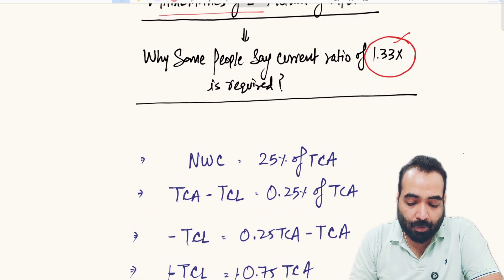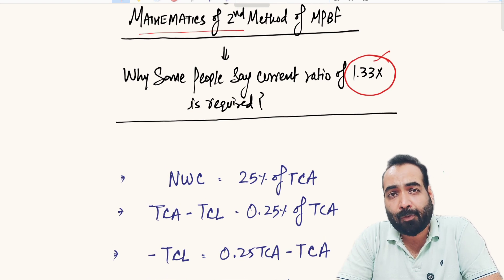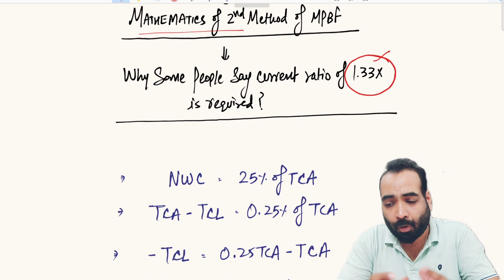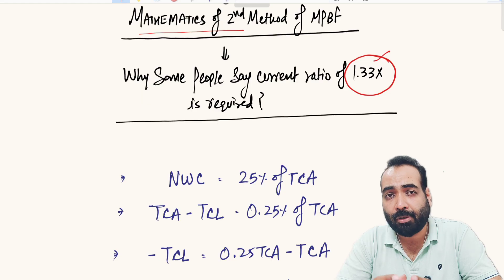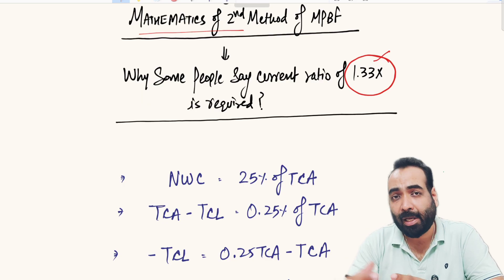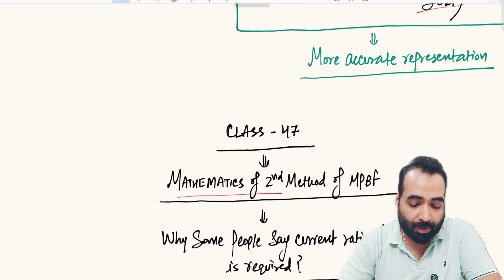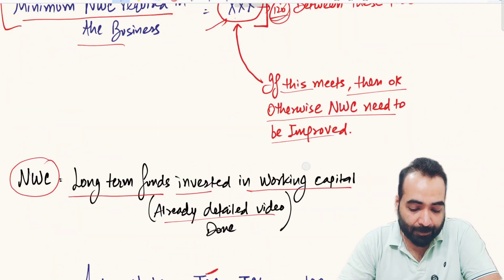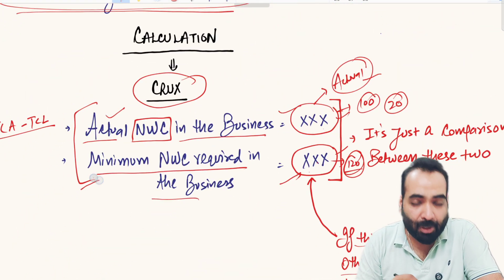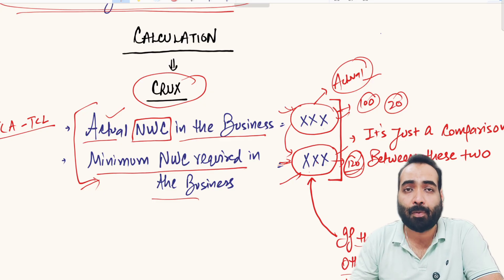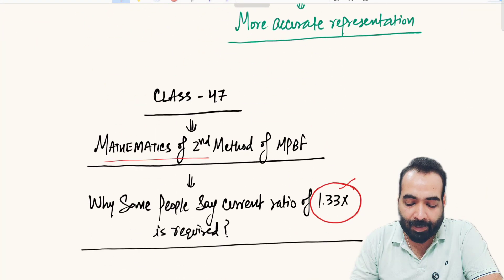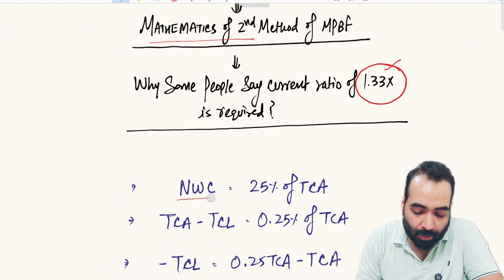In MPBF Method 2, the whole game revolves around the calculation of NWC. The formula states that the NWC should be at a bare minimum level in order to support the eligibility — the actual NWC should be at least at the minimum required level. As we saw in the previous video, the actual NWC should be equal to or more than the minimum required NWC.